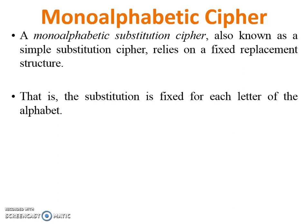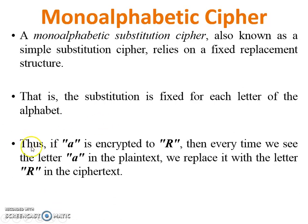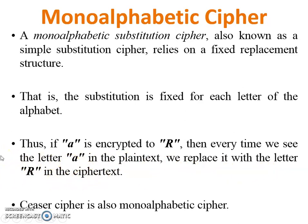For example, if A is encrypted to R, then every time we see the letter A in the plaintext, we replace it with the letter R in the ciphertext. The Caesar cipher is the best example of a mono alphabetic cipher.